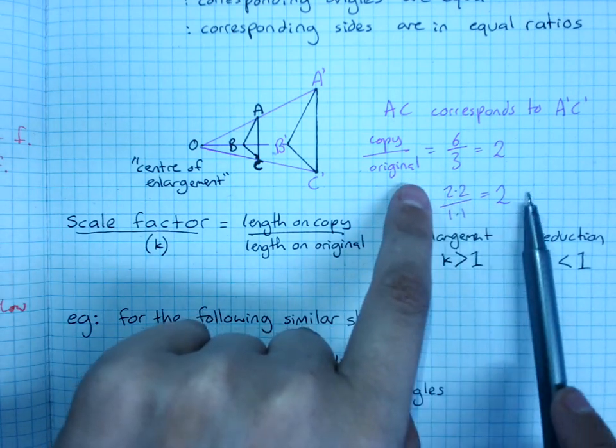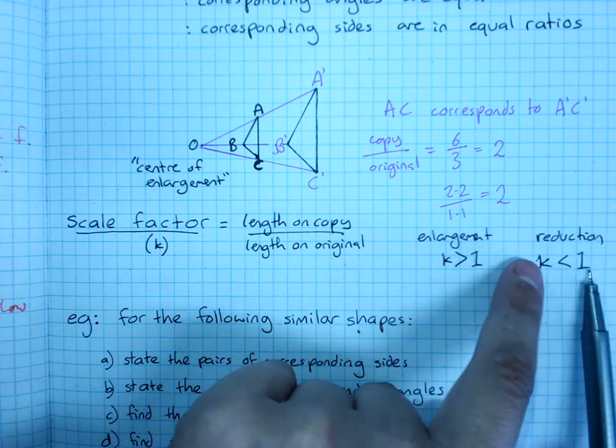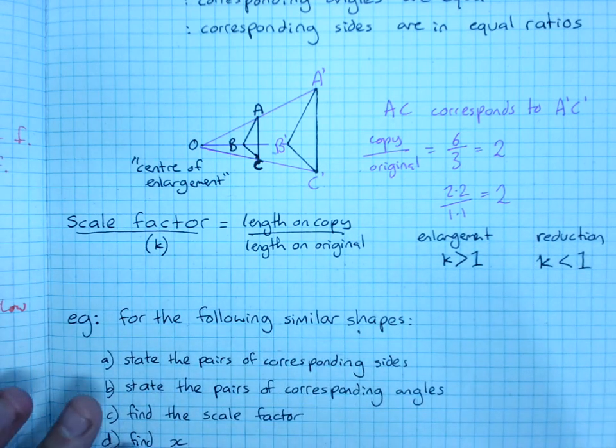When it's an enlargement, K, the scale factor is greater than one. When it's a reduction, it's between zero and one.